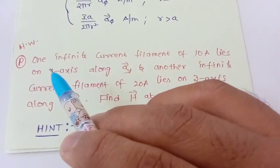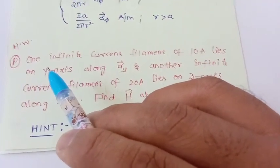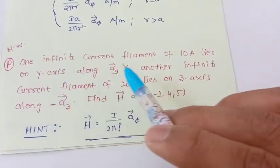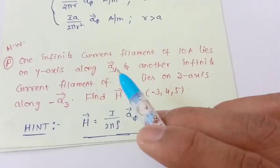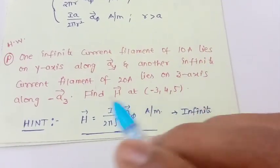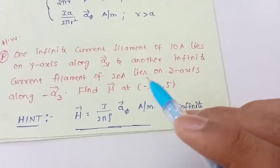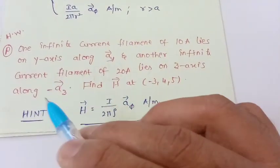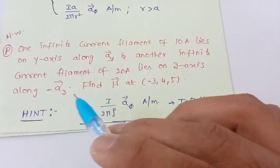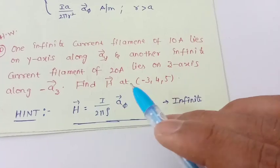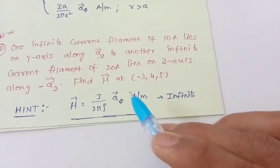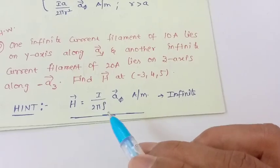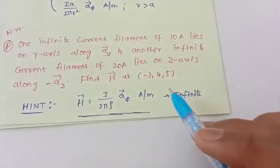More problems for you to do on your own. Observe that one infinite current filament of 10 amperes lies on the y-axis along the y-direction, and another infinite current filament of 20 amperes lies on the z-axis along the minus z-direction. You have to find out the magnetic field intensity at the given point. The hint: since it is an infinite filament, H = I/(2πρ) along the φ-direction.